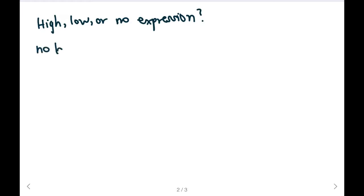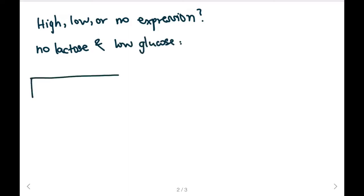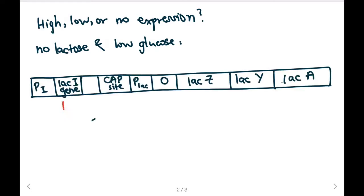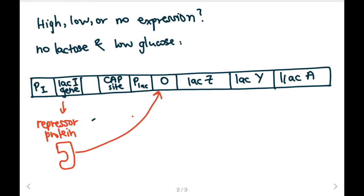If we have no lactose and we have low levels of glucose, and if this is our DNA sequence, then we're going to be producing a repressor protein from the lacI gene. The only time you wouldn't produce a repressor protein is if the lacI gene was mutated. Our repressor protein would look like this, and because there's no lactose, it will bind to the operator.